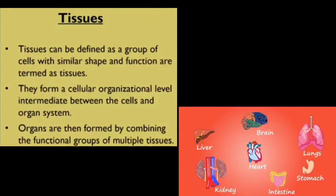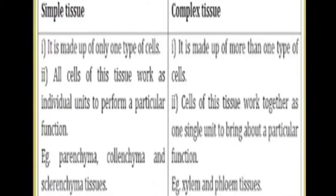Organs are formed by combining the functional groups of multiple tissues. In our body, different types of cells combine to make tissues, and tissues combine to make different types of organs — like the liver, brain, heart, kidney, intestine, stomach, and lungs — each performing different functions. As we are multicellular organisms, there are two types of tissues: simple tissues and complex tissues.